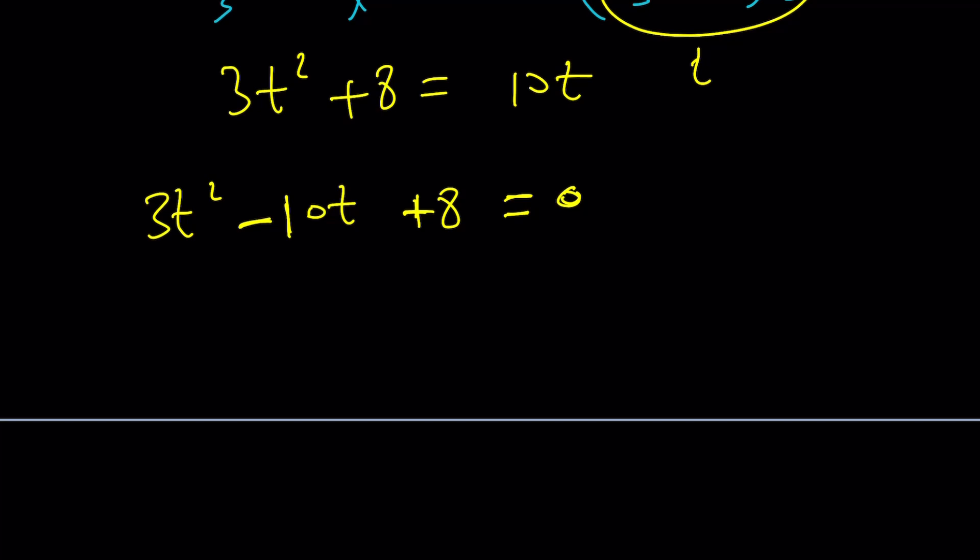So, let's use the quadratic formula. t equals negative b, 10 plus minus the square root of b squared, which is 100, minus 4ac. That would be 96. Beautiful. Because that's a perfect square. That's a 4. That's a 2. So, we get 10 plus minus 2 divided by 6, which kind of splits up.